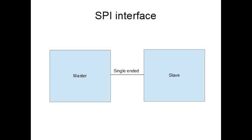SPI interface has a master and a slave connected by signals between them. These are single-ended signals. In SPI interface we have a clock signal, chip select signal, data-in signal, and data-out signal, and we can connect multiple devices as well. The master generates data, generates the clock, and also sends queries to the slave, and then the slave responds or data gets written to the slave accordingly as per the input from the master.